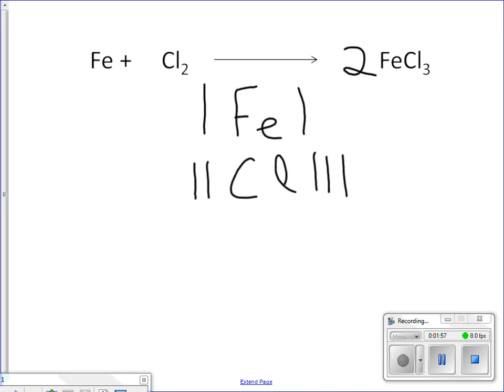Each iron chloride molecule contains one iron. So if I have two of those molecules, I have two iron atoms. So I'll add a tally mark next to iron.